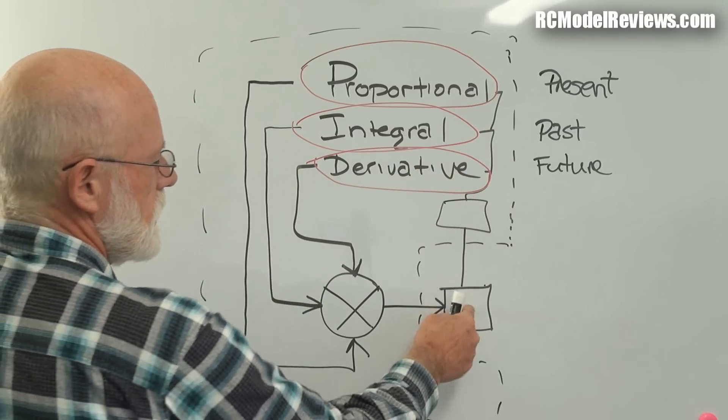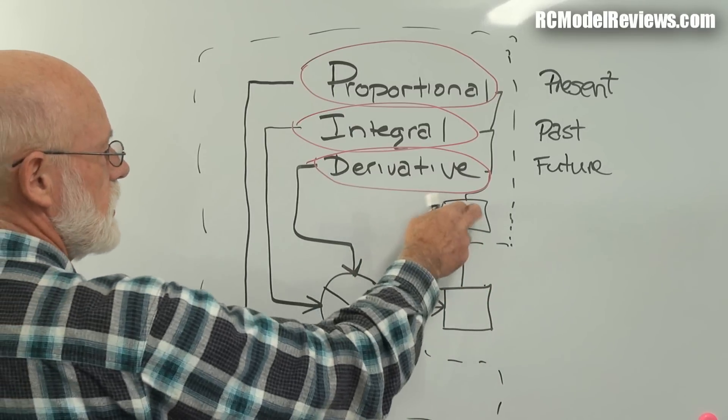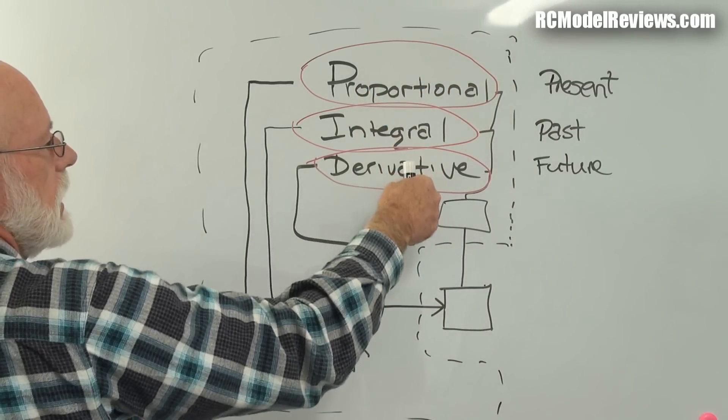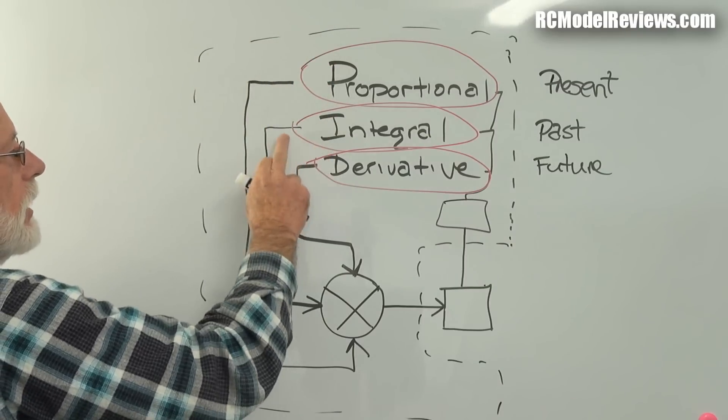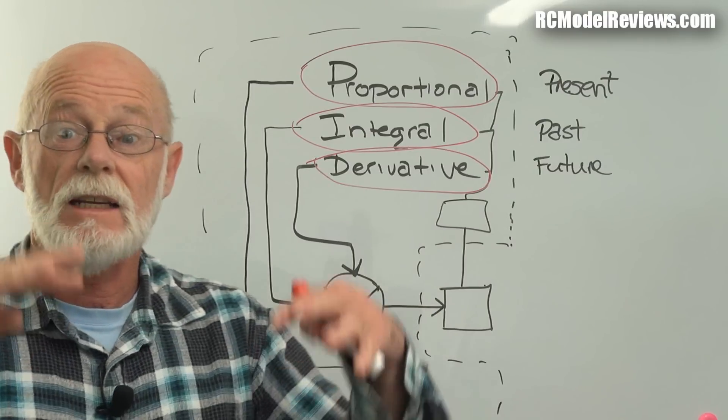This is a feedback loop. Basically, here's our quad. If our quad tilts, this little bit here, the gyro or the accelerometer, picks up the fact it's tilted, feeds the information into these things here, the PID software, which then has some outputs: there's a proportional output, an integral output, and a derivative output. They're all mixed up here, and then fed back into the quad to correct it.